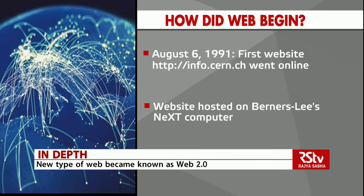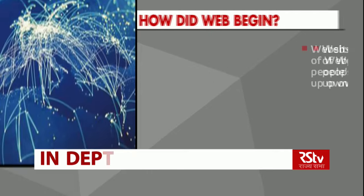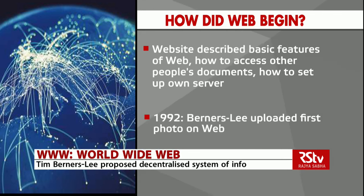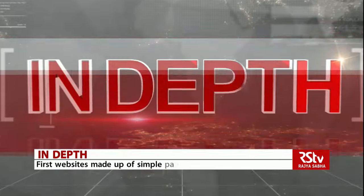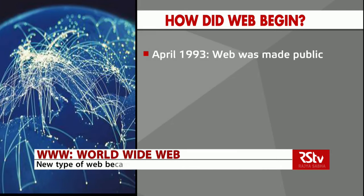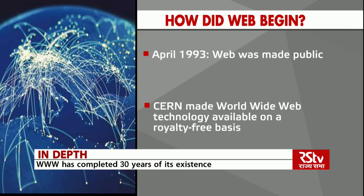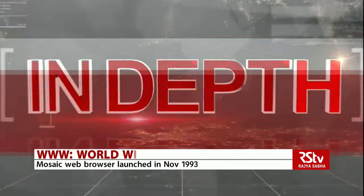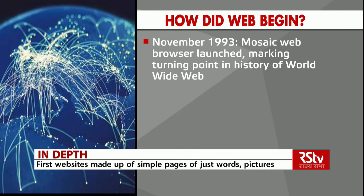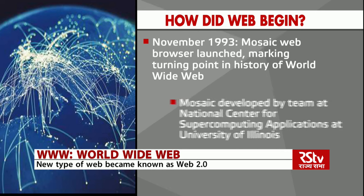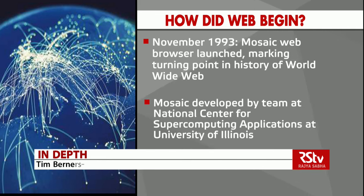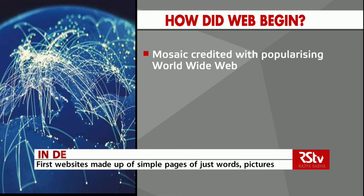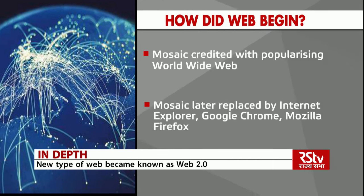The first website was dedicated to the World Wide Web project and was hosted on Berners-Lee's NeXT computer. It described the basic features of the web — how to access other people's documents and how to set up your own server. In 1992, Berners-Lee uploaded the first photo on the web, an image of the CERN house band. In April 1993, the web was made public — CERN made World Wide Web technology available on a royalty-free basis, releasing the software freely. The turning point came with the launch of the Mosaic web browser in November 1993, developed at the National Center for Supercomputing Applications at the University of Illinois. Mosaic was the first browser that accepted pictures and is credited with popularizing the World Wide Web, later replaced by Internet Explorer, Google Chrome, and Mozilla Firefox.